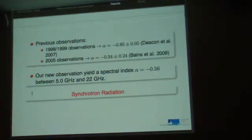The previous observations reported a spectral index of minus 0.8 plus or minus 0.05. The 2005 observations reported a spectral index of minus 0.34 plus or minus 0.21, and then we confirmed that the origin is non-thermal. The spectral index is the spectral index of synchrotron radiation.